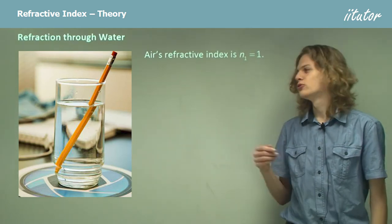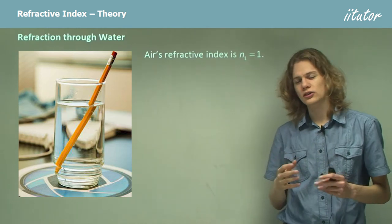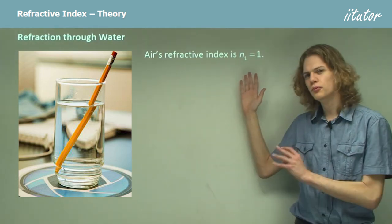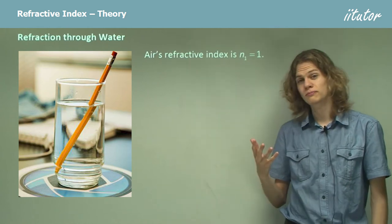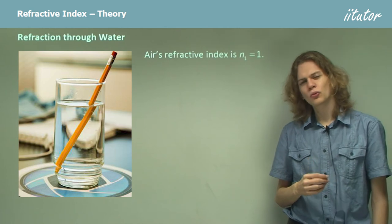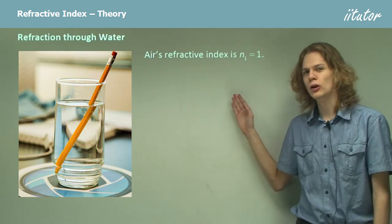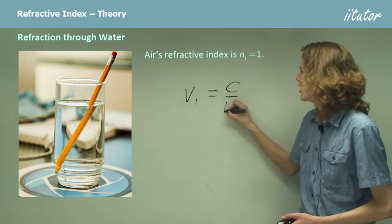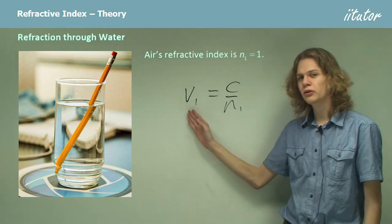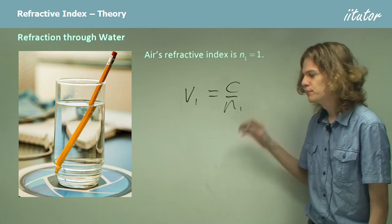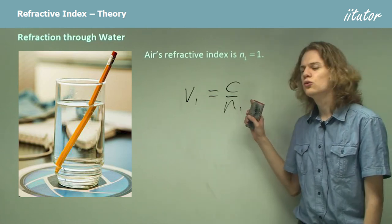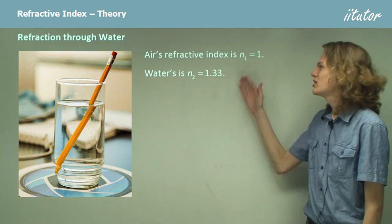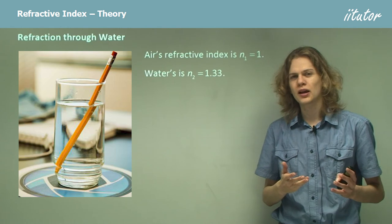Air's refractive index is very close to 1. The only material with a refractive index of exactly 1 is a vacuum. In this photograph we have a pencil passing through both air and water. Since the speed of light in a vacuum is the fastest light can go, and V = C/N, for the speed of light in a material to be smaller than in a vacuum, the refractive index must be greater than 1. For water, the refractive index is about 1.33, so light will bend as it passes from air into water.